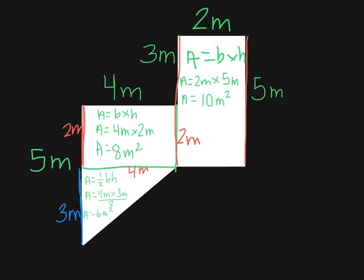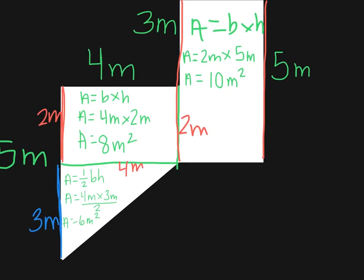We're not done yet, though. Remember, we need to add all of our pieces together. So we have 10 meters squared, got that, 8 meters squared, and 6 meters squared. Add them all together, and our area for this complex shape is 24 meters squared.